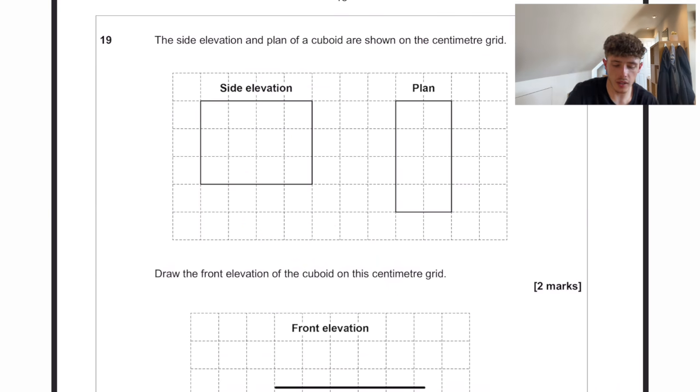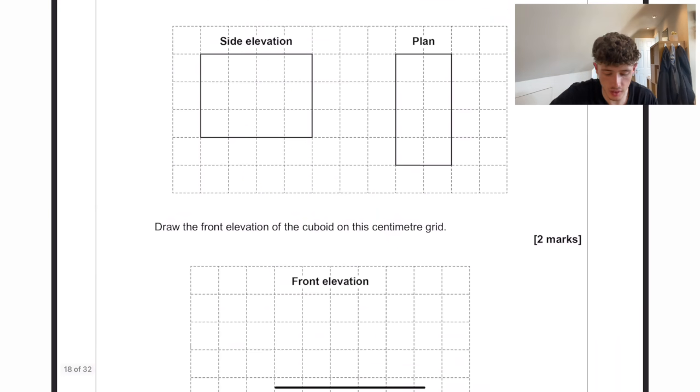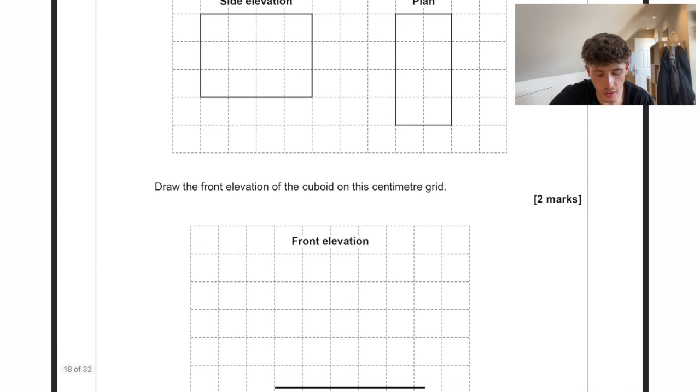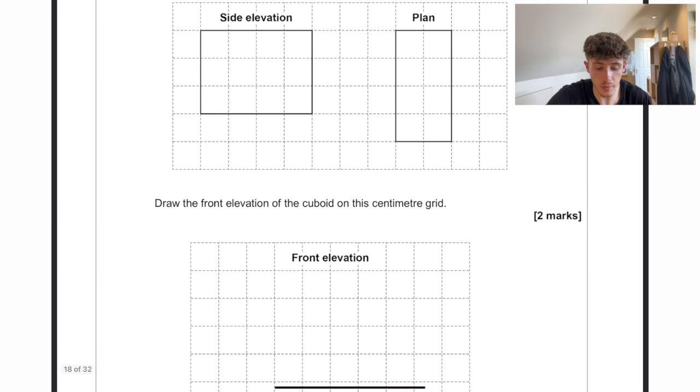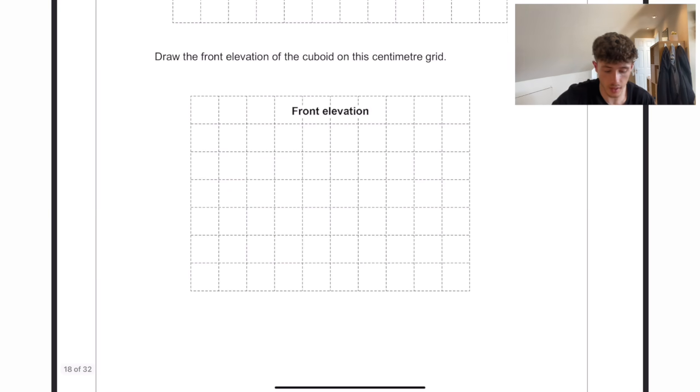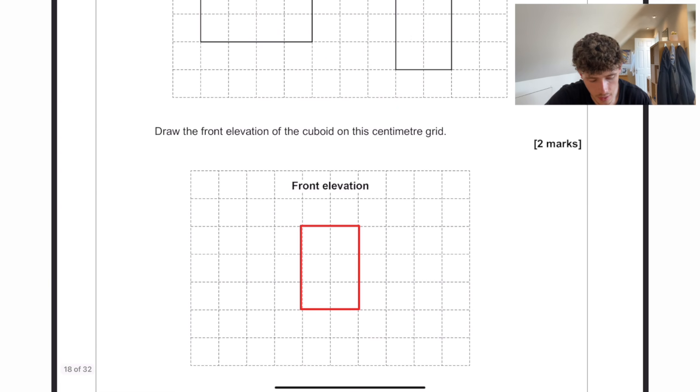The side elevation and plan of a cuboid are shown on the centimetre grid. Draw the front elevation of the cuboid on this centimetre grid. So from the side, you can see it's three high, and from the plan, you can see it's two wide. So we are literally just going to want to do a two by three rectangle, exactly like that. And it sometimes is worth just writing the scales down so you know exactly what you're doing.